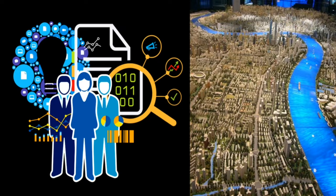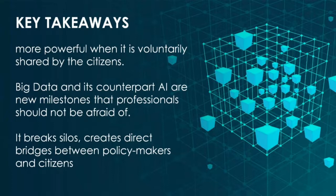Information derived from big data will make urban planners and designers more informed and aware, and will strengthen the role of design as an activity that sets goals beyond past evidence into the future. Big data-informed urban design and governance will fundamentally improve the understanding and utilization of urban data and support the formalization of expert knowledge for design and decision-making processes. Big data becomes more powerful when voluntarily shared by citizens. Through online design tools, it is now possible to mobilize collective intelligence to craft the design of future neighborhoods and engage citizens in creative thinking. Big data and AI are new milestones that professionals should not be afraid of — big data breaks silos, creates direct bridges between policy makers and citizens, and supports real-time views of a particular city.